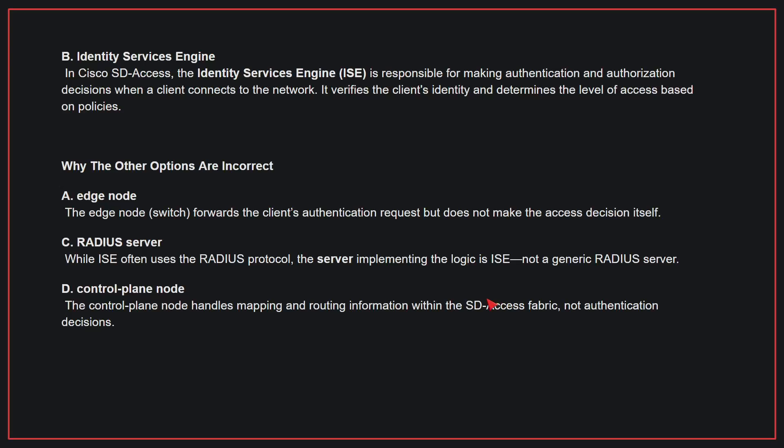Why the other options are incorrect? A: The edge node forwards the client's authentication request but does not make the access decision itself. C: While ISE often uses the RADIUS protocol, the server implementing the logic is ISE, not a generic RADIUS server. D: The control plane node handles mapping and routing information within the SD-Access fabric, not authentication decisions. Therefore, the correct answer is B.